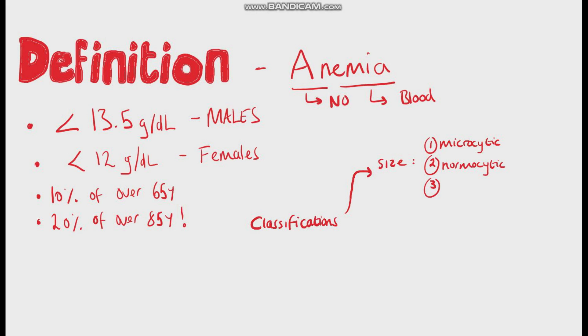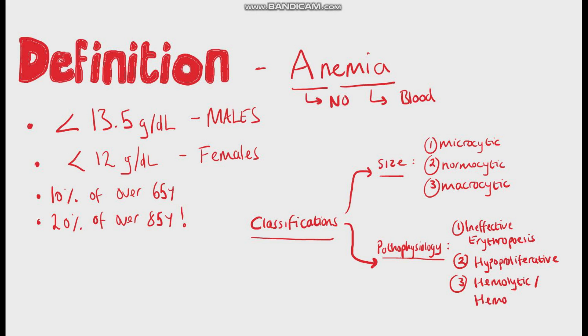There are two main ways of classifying it. By size or volume of the red blood cells, which is where the different types are divided into microcytic, normocytic, and macrocytic anemia. Or we can divide anemia based on the pathophysiology. So we have hypoproliferative anemia, ineffective erythropoiesis, hemolytic anemia, or hemorrhagic anemia.